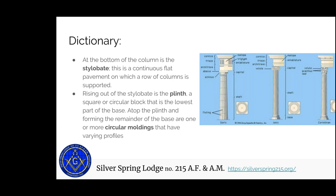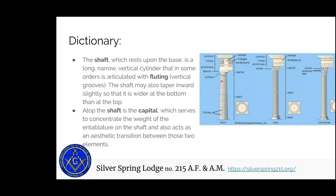For the dictionary of column anatomy: at the bottom of the column we have the base, but there's usually a flat stone at the very bottom called the stylobate — that's where the column meets the pavement, what supports the columns. Some columns will have a plinth, which is the square block the column sits on top of as part of the base, and then on top of the plinth there'll be a couple of other circular moldings. You can see in the Ionic and Corinthian columns near the base these moldings that step up from the plinth to the column itself.